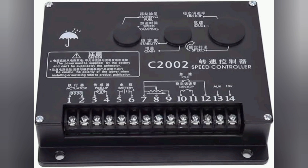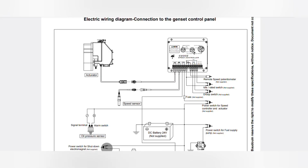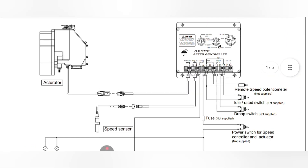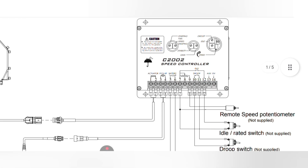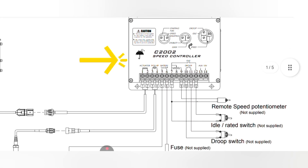As you can see, our model C2002 speed controller has a terminal TV, a speed adjustment potentiometer, and complete details covered in this video. Before installing this controller, please understand that this is a DC voltage system. Let's get started understanding the installation of the C2002 speed controller and its complete wiring.